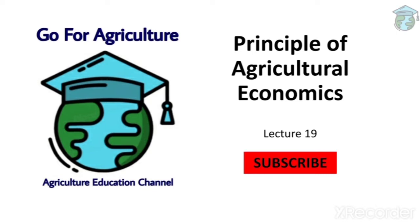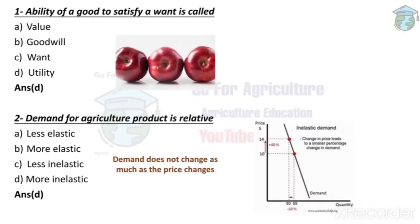In today's lecture we are going to discuss important MCQs about economics. The first MCQ question is: the ability of a good to satisfy a want is called utility. Basically, a good means a product like an apple. After eating an apple, your hunger decreases. This is the ability of the apple to satisfy your hunger, and we call this ability utility.